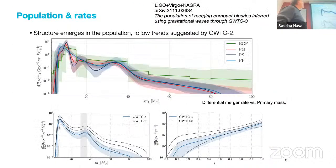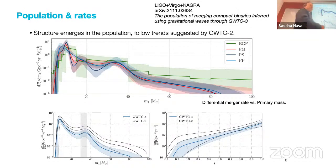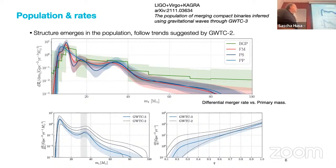One of the main things we want to learn is what are the formation channels and the population of these binaries. A plot from the latest collaboration paper shows the differential merger rate versus the mass of the primary, and one can see certain structure — we don't even know what it is yet. The next observation run O4 is scheduled to start at the end of May and will last for a year and a half. We hope to observe hundreds of binaries and track this structure better.